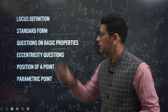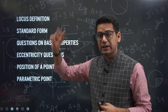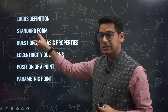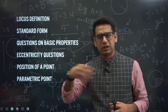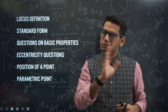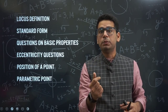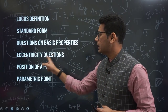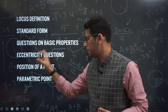Let's talk about these two chapters — ellipse as well as hyperbola. The locus definition, when ellipse and hyperbola are in standard form, equations or questions on basic properties — vertex, foci, directrices — these basic questions should be done well, without wasting speed and time. Eccentricity questions are very famous and important for the paper.